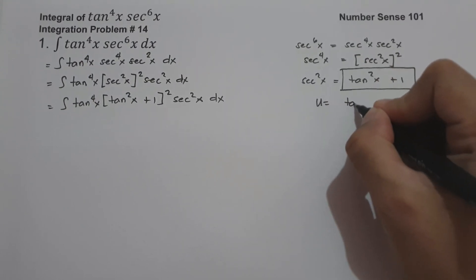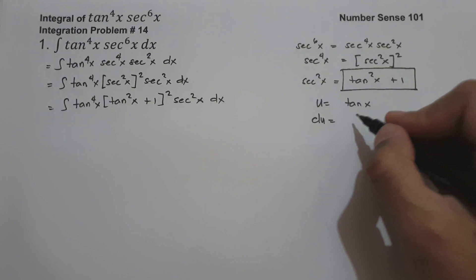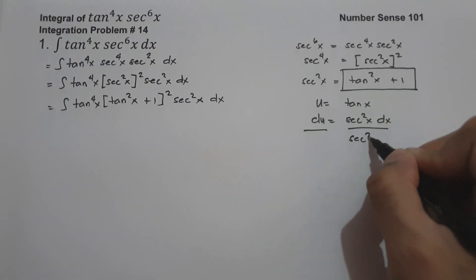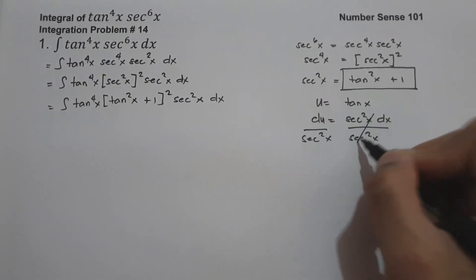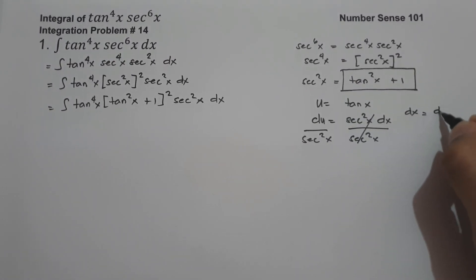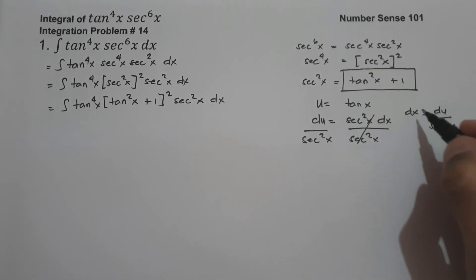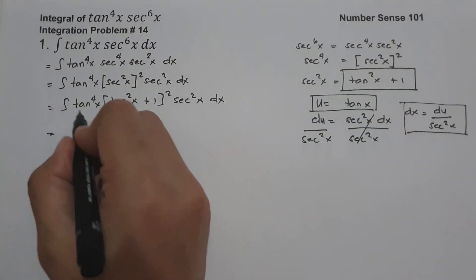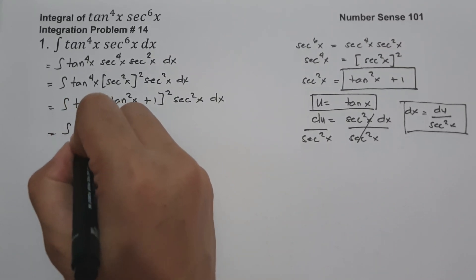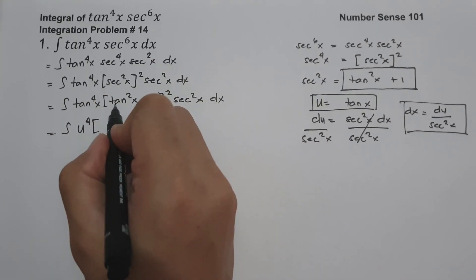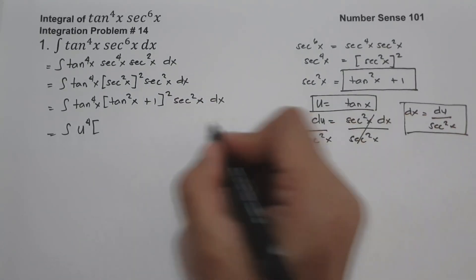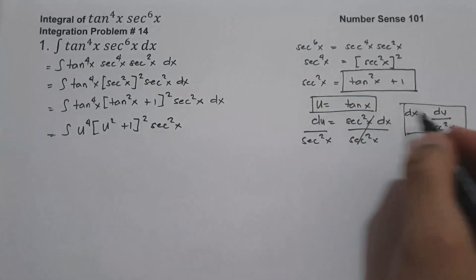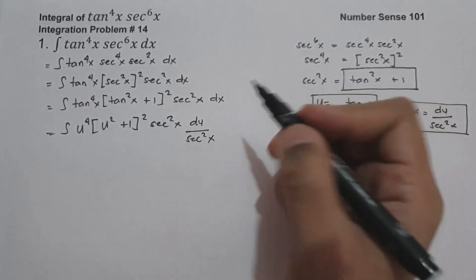Now we use u-substitution. Let u = tan(x), so du = sec²(x) dx, which means dx = du / sec²(x). Substituting in, we get u⁴ · (u² + 1)² · sec²(x) · (du / sec²(x)). The sec²(x) terms cancel, leaving the antiderivative of u⁴ · (u² + 1)² du.